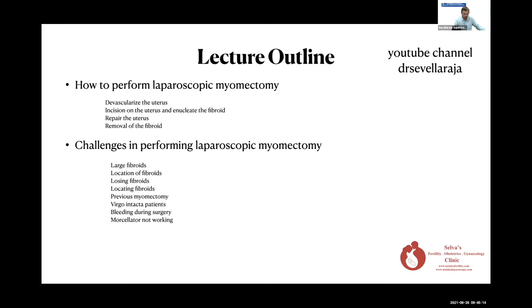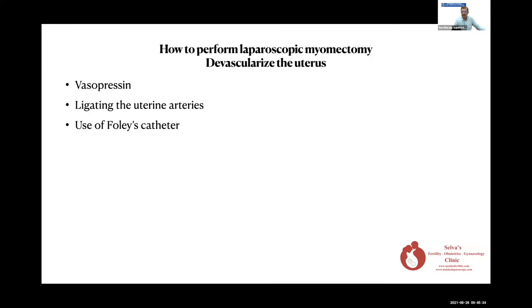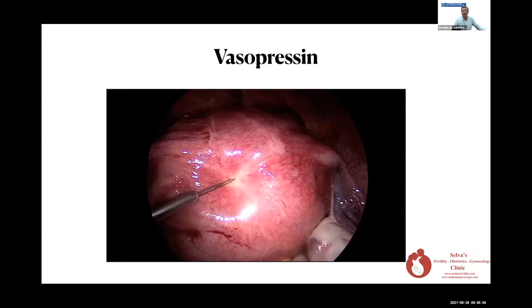Let's first go on to devascularizing the uterus. The ways to devascularize the uterus include vasopressin, which is very useful; ligating the uterine artery, which has already been discussed; and a new technique I've developed using a Foley's catheter. Let's start with vasopressin.